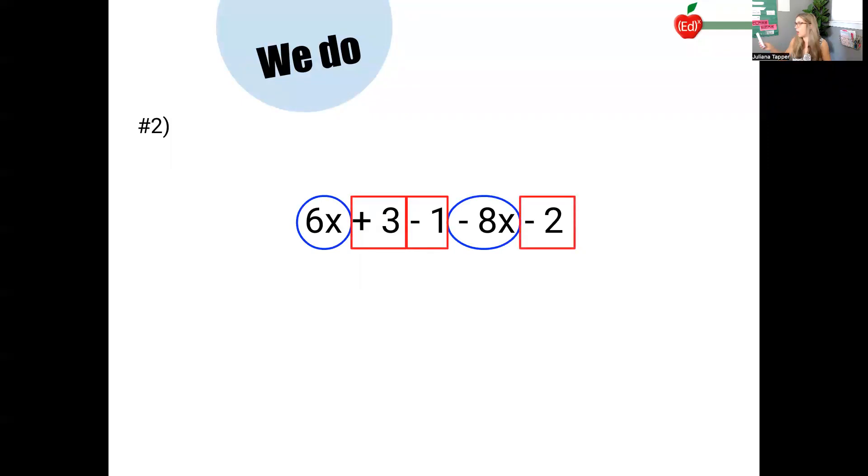Right? So you get the idea. You can just call on kids to help you out with each part of this section so that you understand that they're really getting it. And then I combine 6x minus 8x. I would call on a student to help me out with that. This is, it's like saying I have $6. I go in debt $8. I'm in debt $2. So negative 2x.